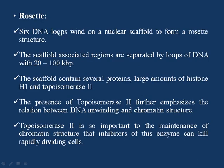Six such DNA loops wind around the nuclear scaffold to form a rosette structure. The nuclear scaffold is the region which contains several proteins, a large amount of histone H1, and the enzyme topoisomerase II. Around this nuclear scaffold, six DNA loops are formed. Scaffold-associated regions are separated by loops of DNA with 200 kilobase spacing.